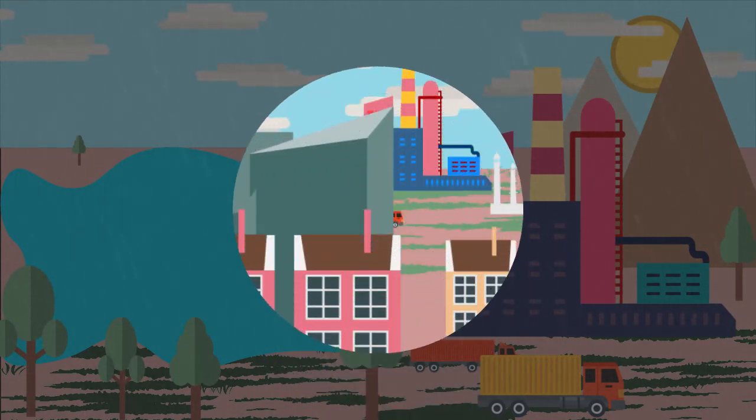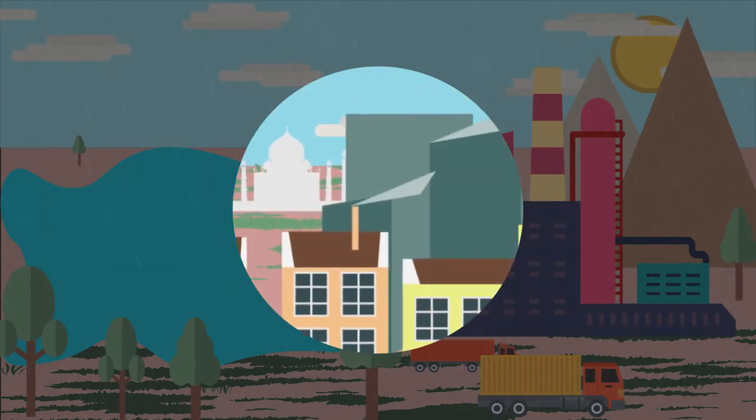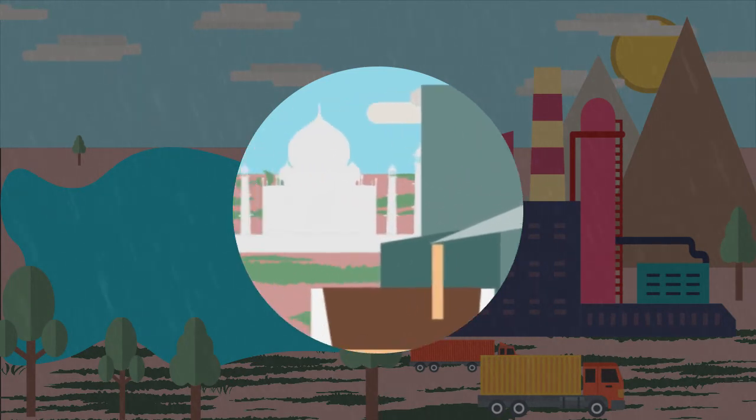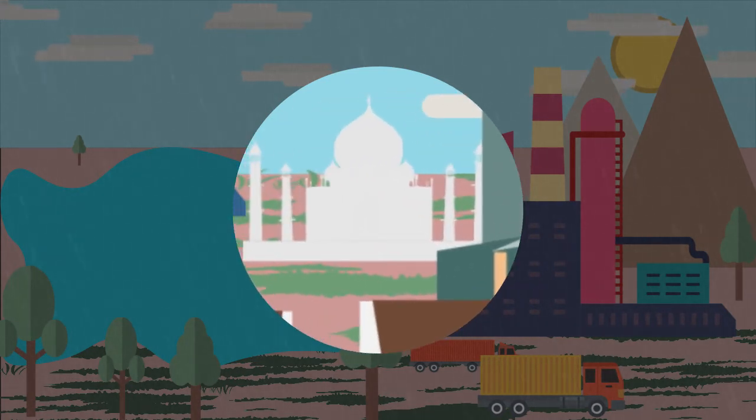Acid rain also affects old buildings and monuments. Taj Mahal is one of the victims of acid rain, as it is surrounded by large industries. Taj Mahal's marbles have lost their luster considerably because of this issue.